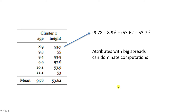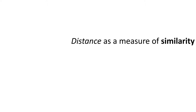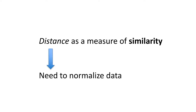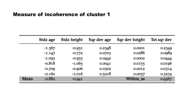Attributes with big spreads and attributes with big values can dominate the computations. Therefore, we need to normalize the values, which means replacing each value by its z-score: x minus the mean divided by the standard deviation. Because we are using distance as a measure of similarity, we need to normalize the data.